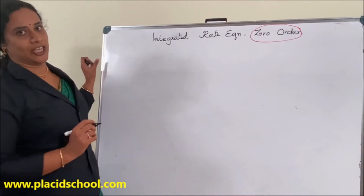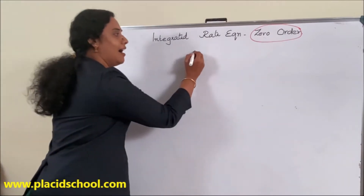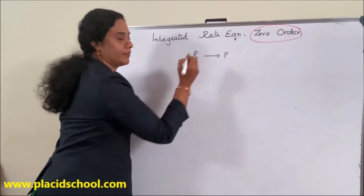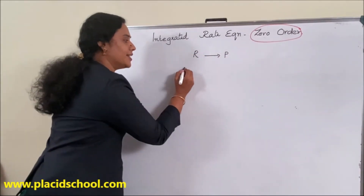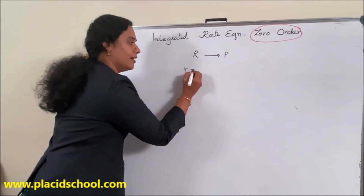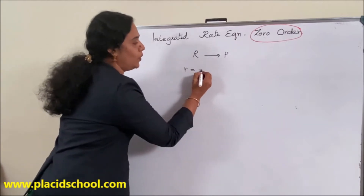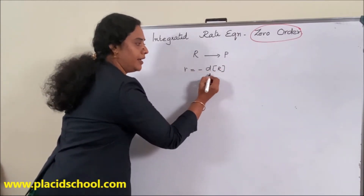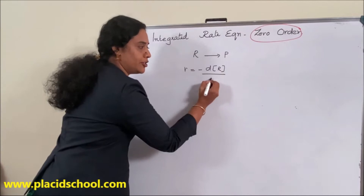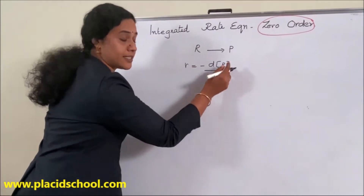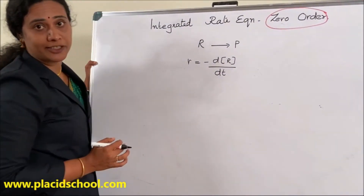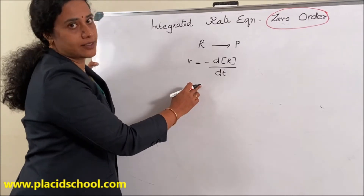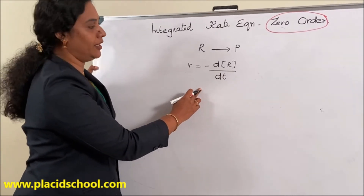Consider the reaction R gives P. The rate of variation R, written as small letter r, is equal to minus dR by dt — that is, the change in concentration of reactant divided by change in time. This equation is known as the differential rate equation.